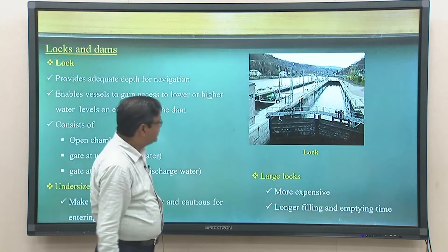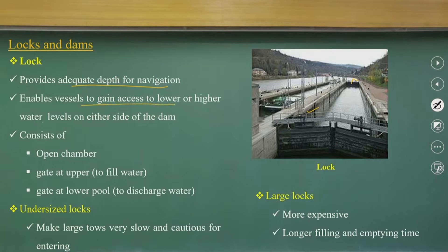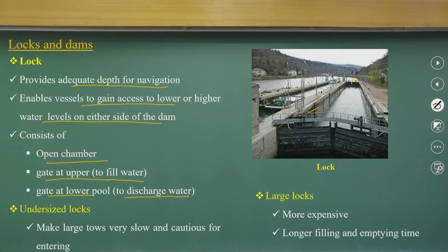The lock arrangement opens and closes to provide the educated depth for navigation, giving access to lower or higher water levels on either side of the dam. It has an open chamber with a gate at the upper end to fill with water, and a lower pool which discharges the waters. It is costly and expensive, and the locking time depends on how long it takes to fill and empty the chambers when ships go through the lock systems.